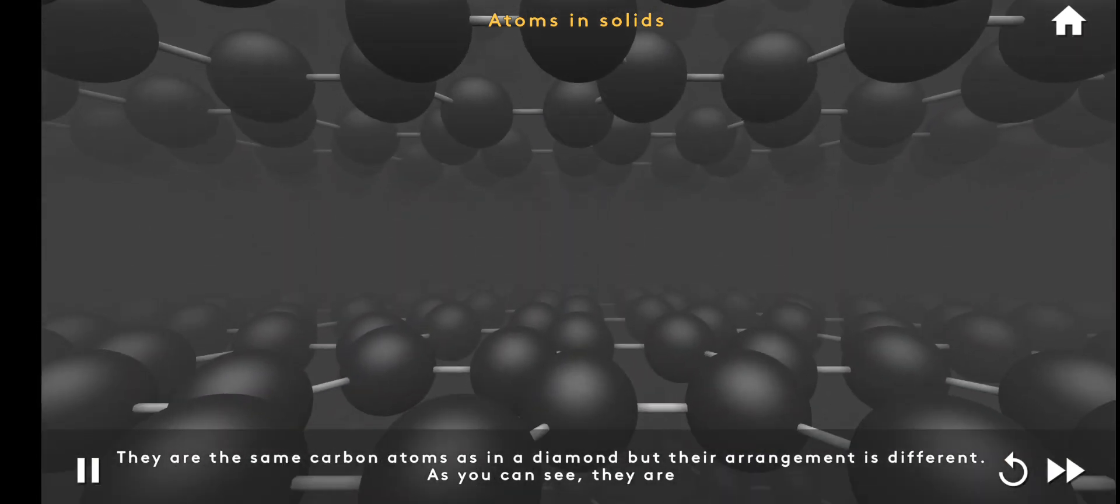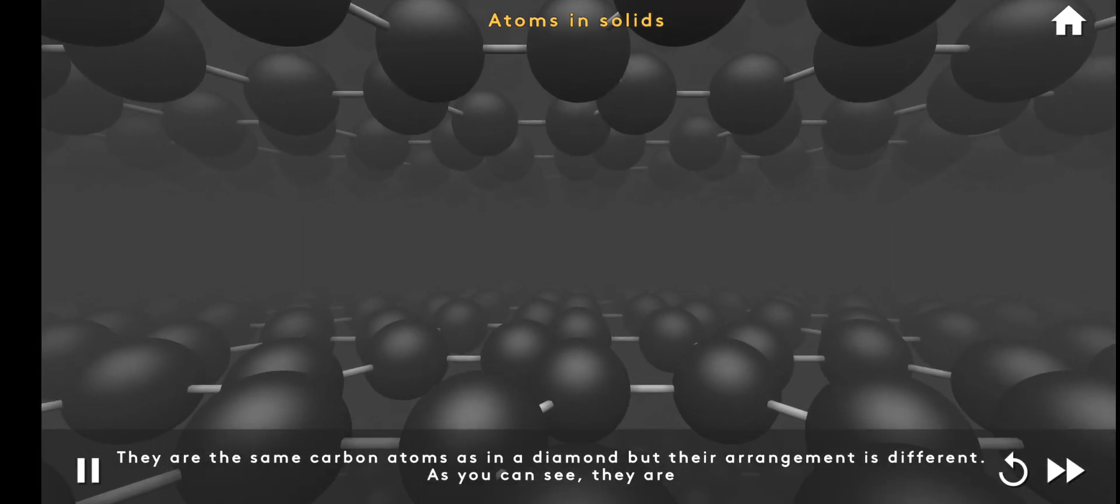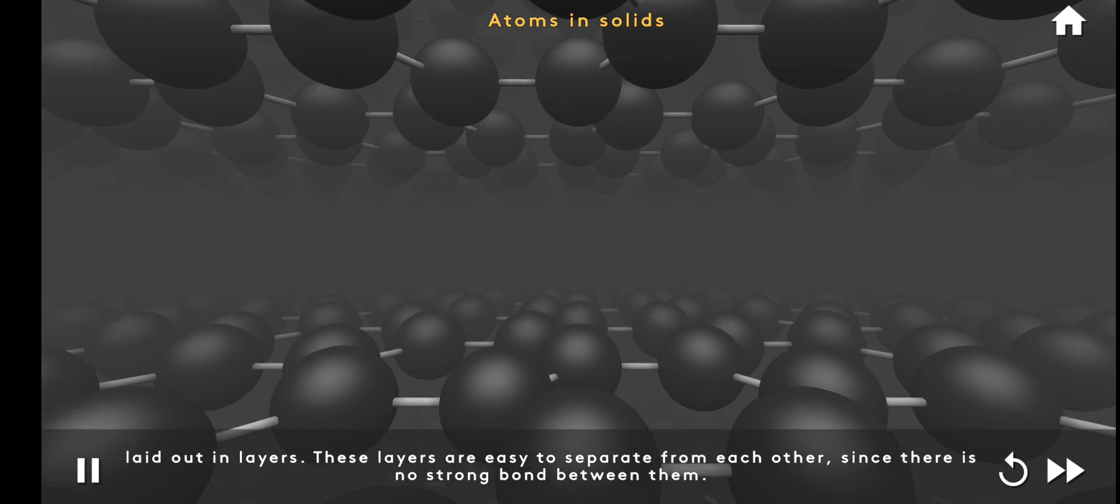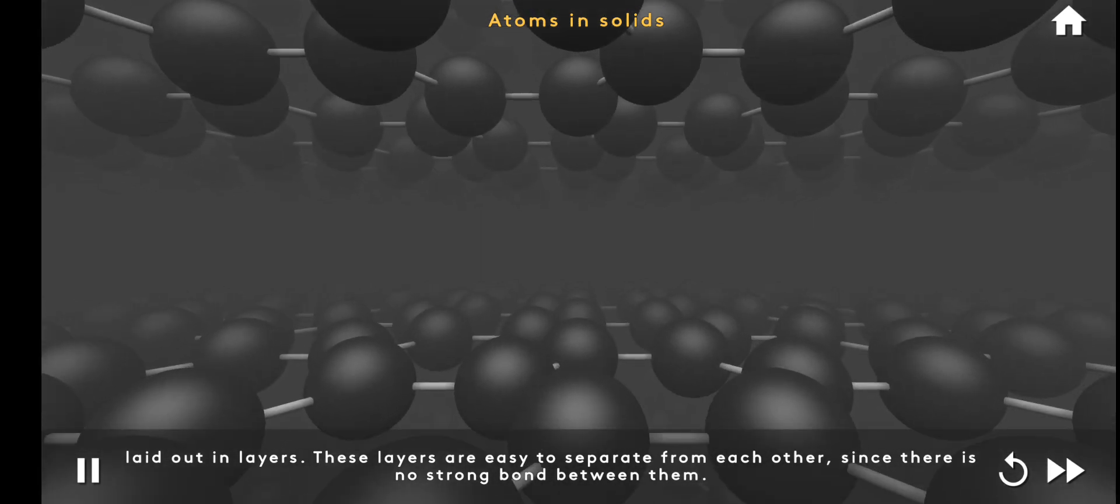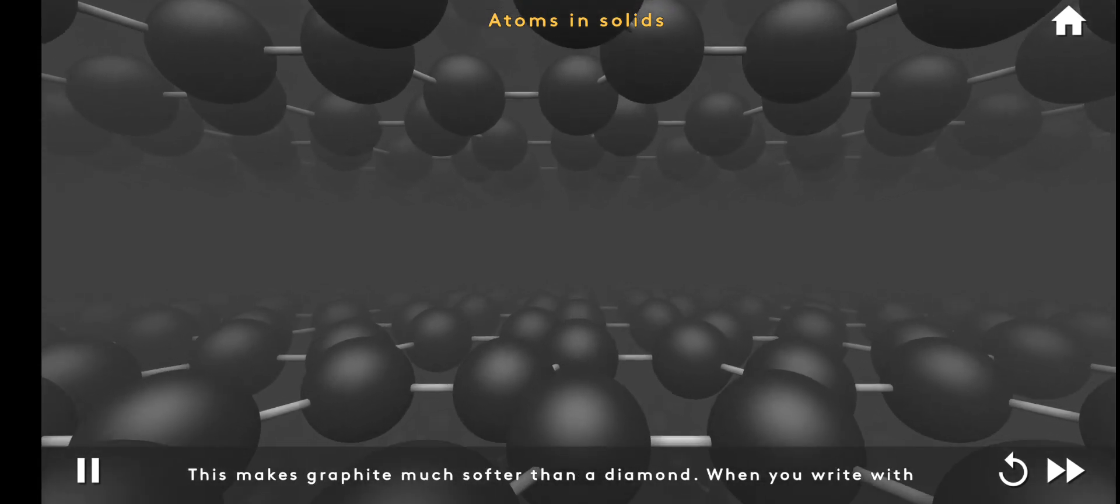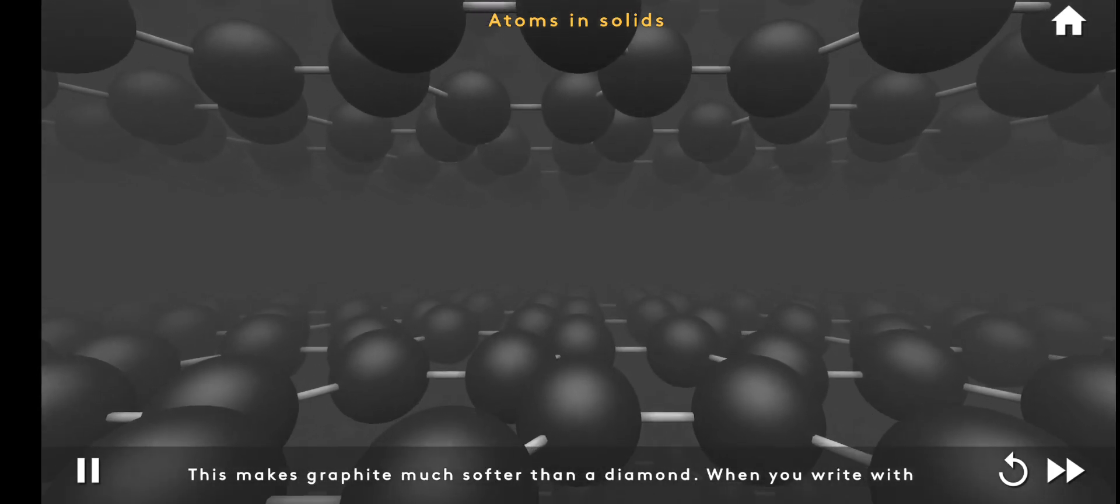They are the same carbon atoms as in a diamond, but their arrangement is different. As you can see, they are laid out in layers. These layers are easy to separate from each other since there is no strong bond between them. This makes graphite much softer than a diamond.